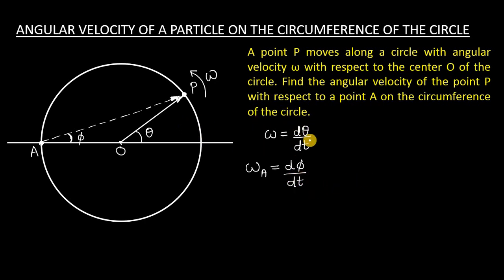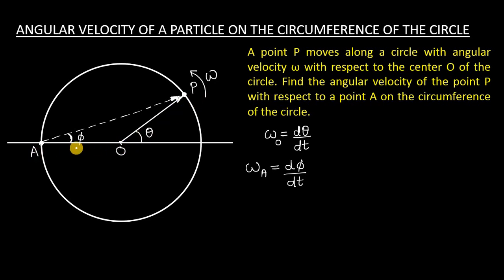What is given in the question is the angular velocity with respect to point O — that is omega. The angular velocity with respect to point A is defined as dφ/dt. Now, in this circle, OA and OP are both radii — OA is the radius and OP is also the radius of the circle.